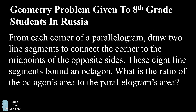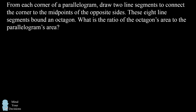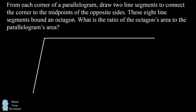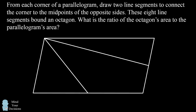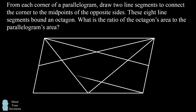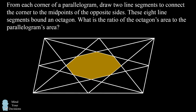This challenging problem was given to 8th grade students in Russia. One of the difficulties of this problem is even trying to draw the diagram. We start out with the parallelogram, and from each corner we draw two line segments to connect the corner to the midpoints of the opposite sides. We need to do that for each of the four corners. In total, we've drawn eight line segments and these line segments bound an octagon. The question is: what is the ratio of the octagon's area to the parallelogram's area?